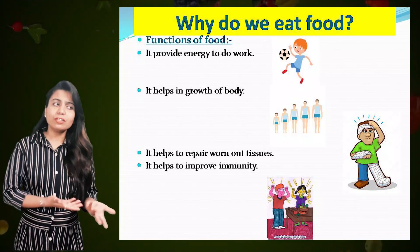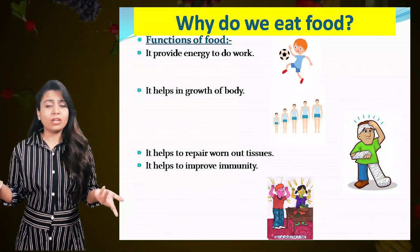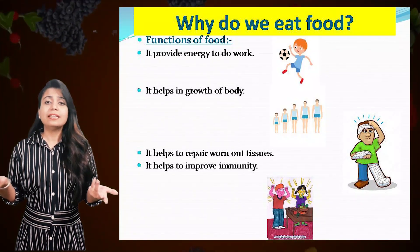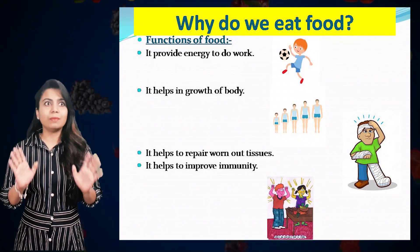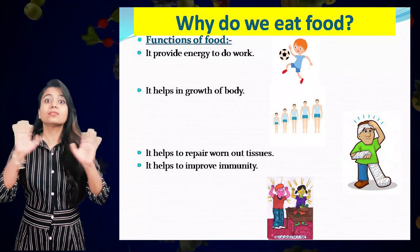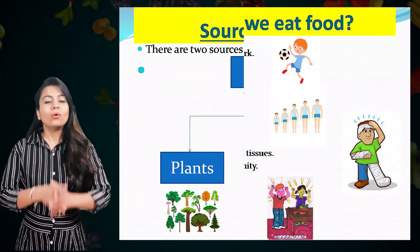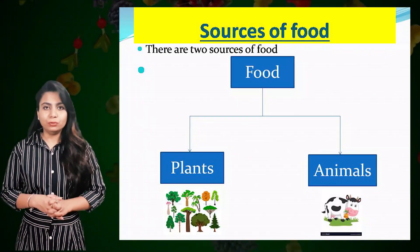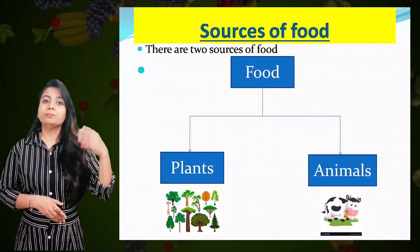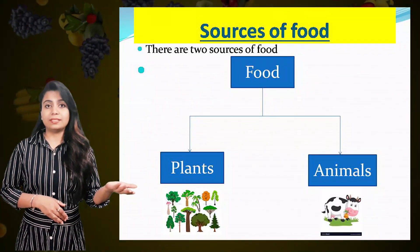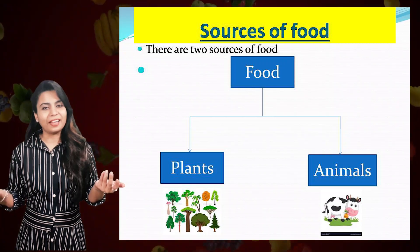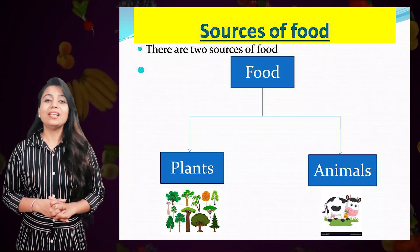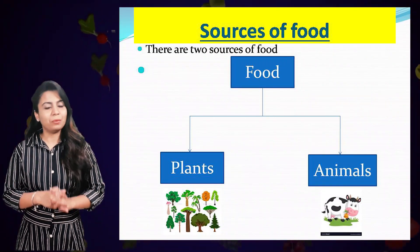Now, if food is very much helpful for us, then from where do we get this food? We get food from two sources: plants and animals. Let's discuss them one by one.